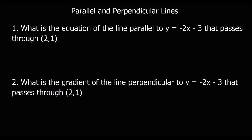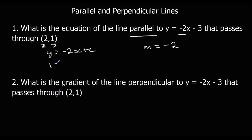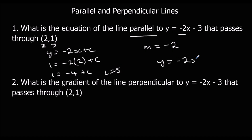Try and work out the equation of the line parallel and perpendicular to y equals minus 2x minus 3, passing through (2, 1). The gradient of a parallel line is the same, so m is going to be minus 2. So we have y equals minus 2x plus c. Substituting in x and y: 1 equals minus 2 times 2 plus c, giving 1 equals minus 4 plus c, so c is 5. Therefore y equals minus 2x plus 5.